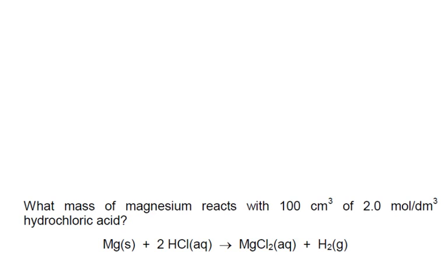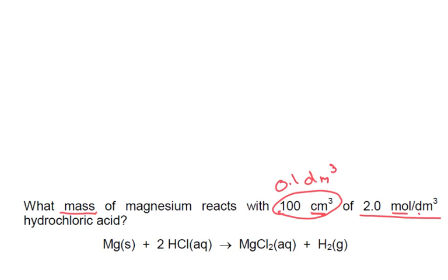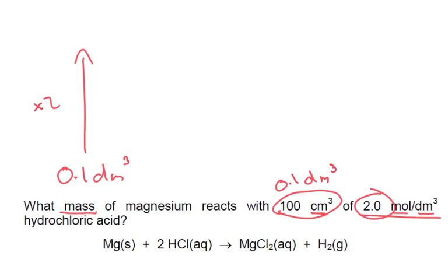Problem 1: What mass of magnesium reacts with 100 centimetres cubed of 2.0 moles per decimetre cubed hydrochloric acid? We're looking for mass at the end. They've given us a volume, but it's in centimetres cubed, so dividing by a thousand we get 0.1 decimetres cubed. Our concentration is 2 moles per decimetre cubed. So our volume is 0.1 decimetres cubed, and multiplying by the concentration of 2, we're going to find out the number of moles.